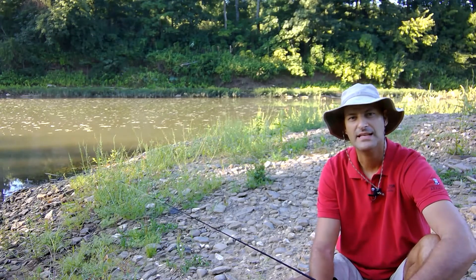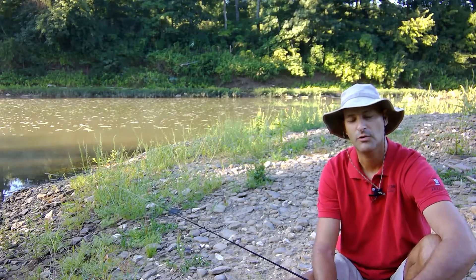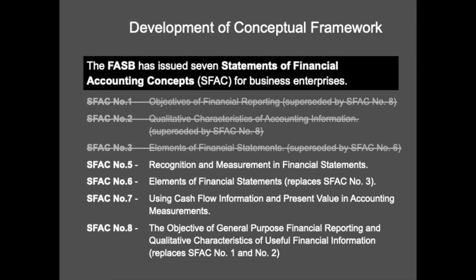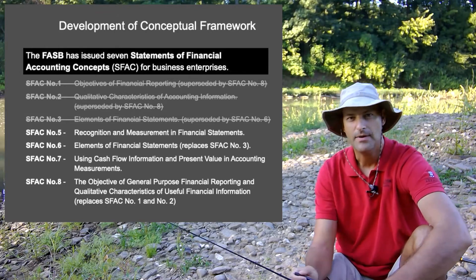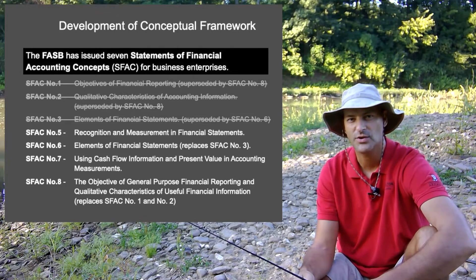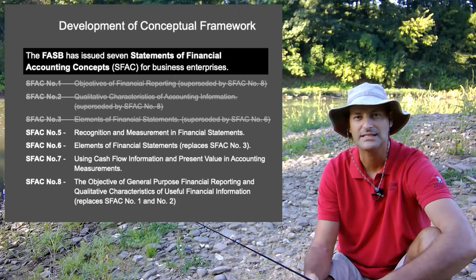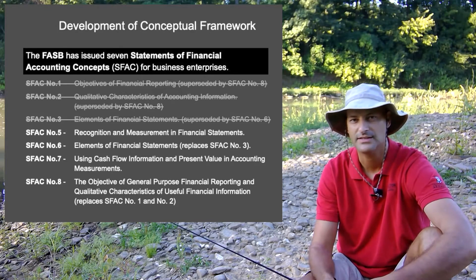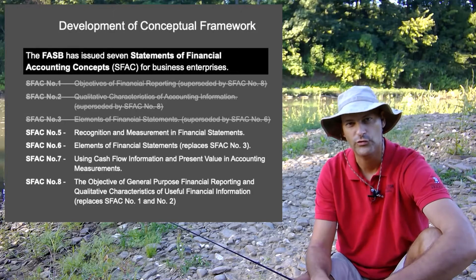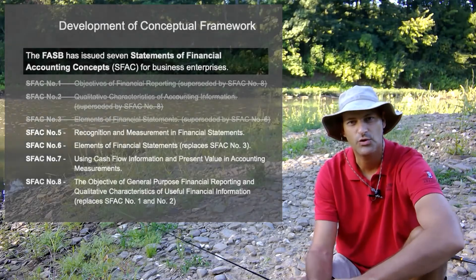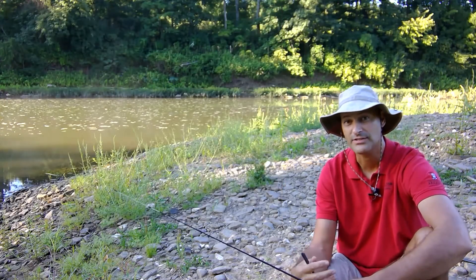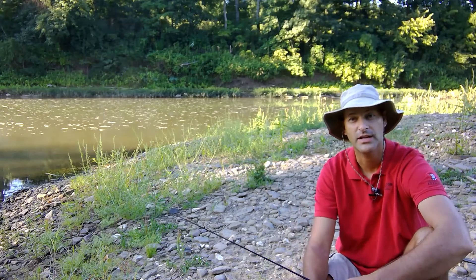The conceptual framework has eight statements of financial accounting concepts, or SFACs, for business enterprises, although we keep overriding some of them. Generally, SFAC 5 is recognition and measurement, 6 is elements of statements, 7 is cash flow information, and 8 went back and overrode one and two — covering objectives and general purpose financial reporting — which gave us our qualitative characteristics that we'll talk about in a little bit.